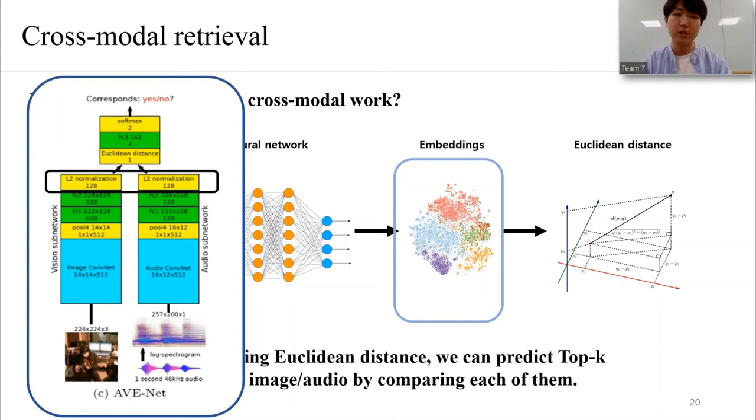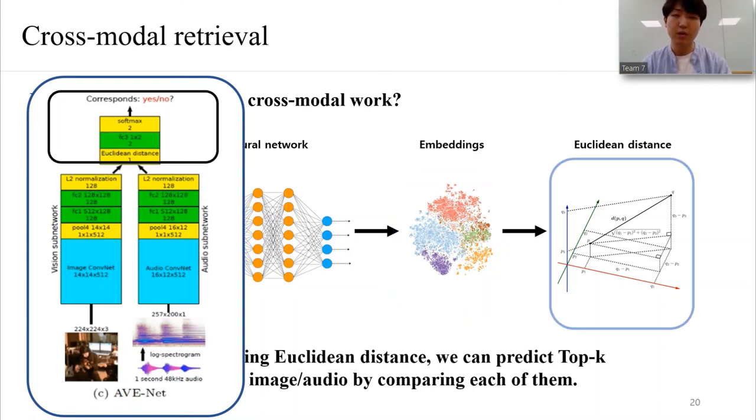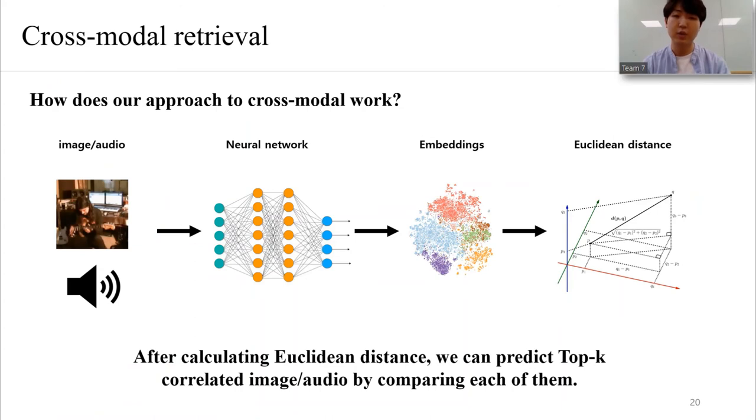Next, by using this model, embed each of the data into our embedding spaces. Finally, once we get the whole embedding data, calculate the Euclidean distance between each of the data we want to know. After these sequences, we can find which of the image or audio is most related to others.